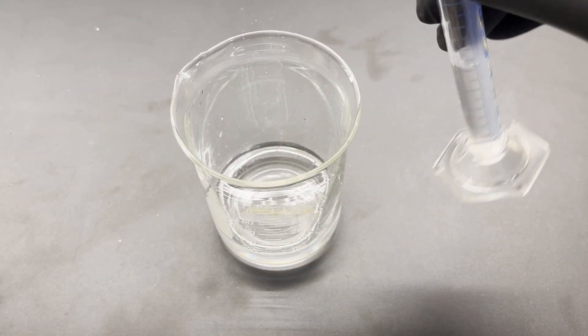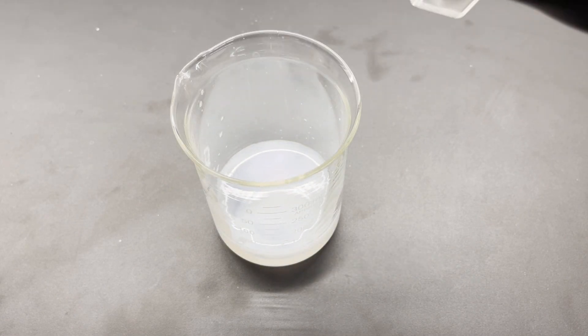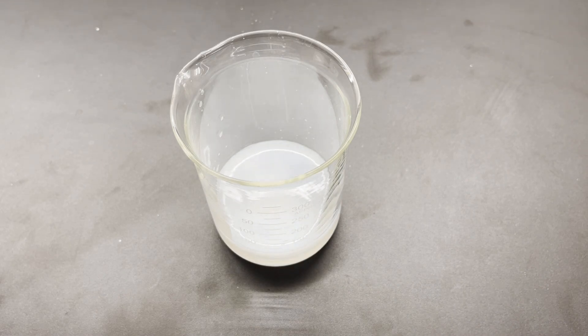100 ml of the saturated table salt solution is transferred to a clean beaker and then 10 ml of the prepared silver nitrate solution is added.